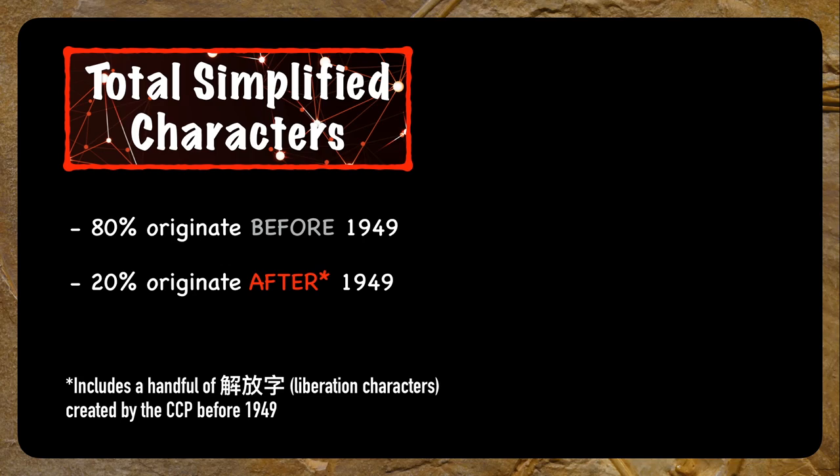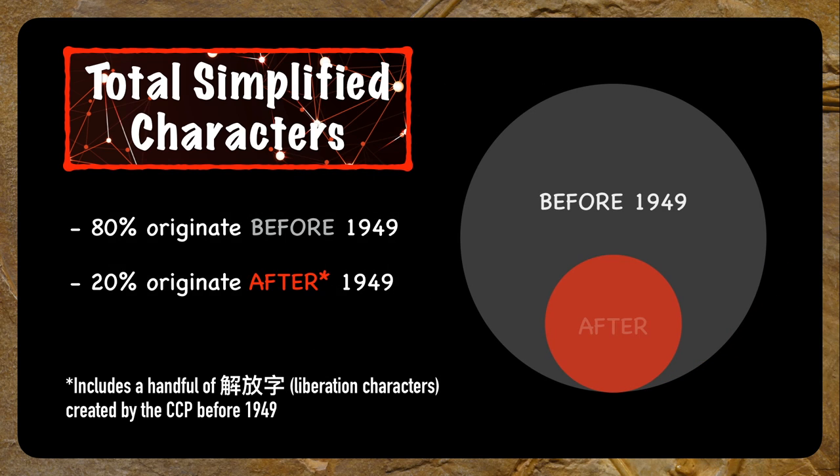To be honest, the narrative I just described is exactly what I'd always heard. But after doing my own research, the truth I discovered was shocking. Of all the characters that were simplified in China, only about 20% were invented after 1949. And only a fraction of those were created from thin air. The vast majority of simplified characters evolved from ancient forms, calligraphy, or handwriting — derived from variations of standard characters. What we know as simplified characters today were simply the variant characters of yesterday.